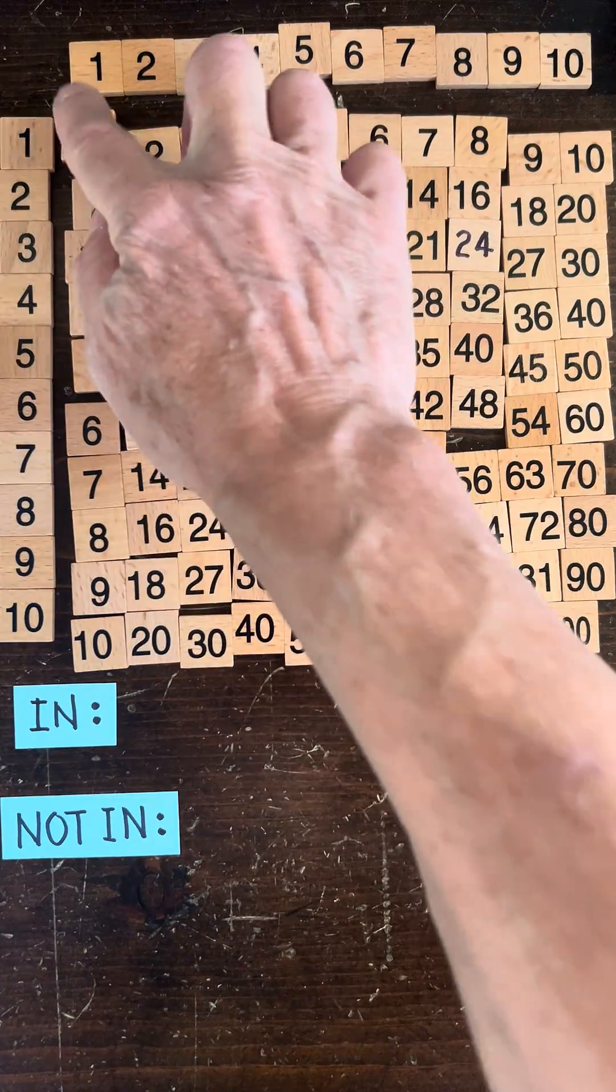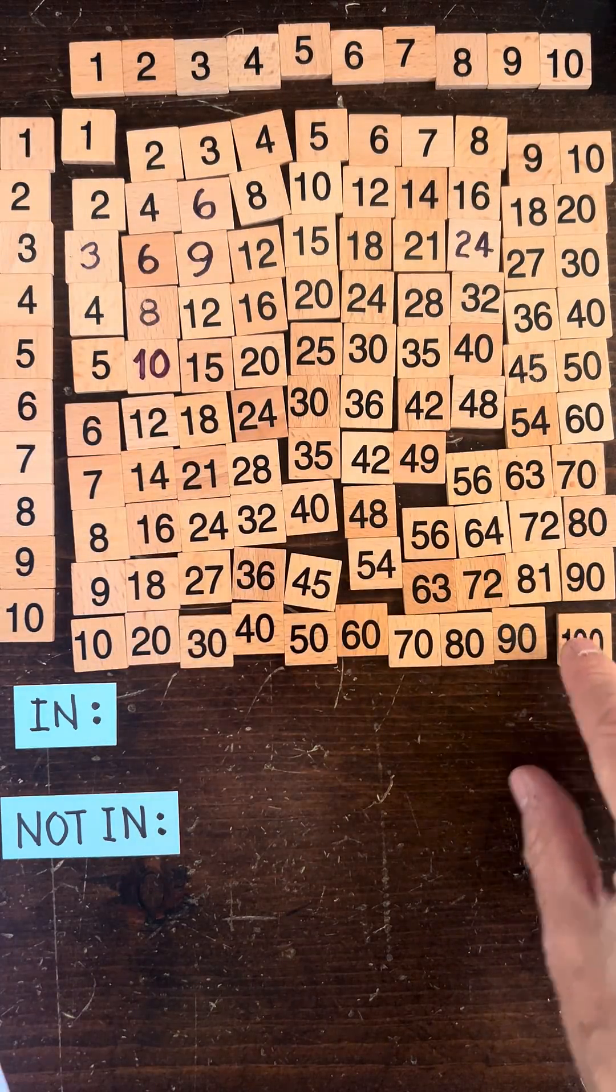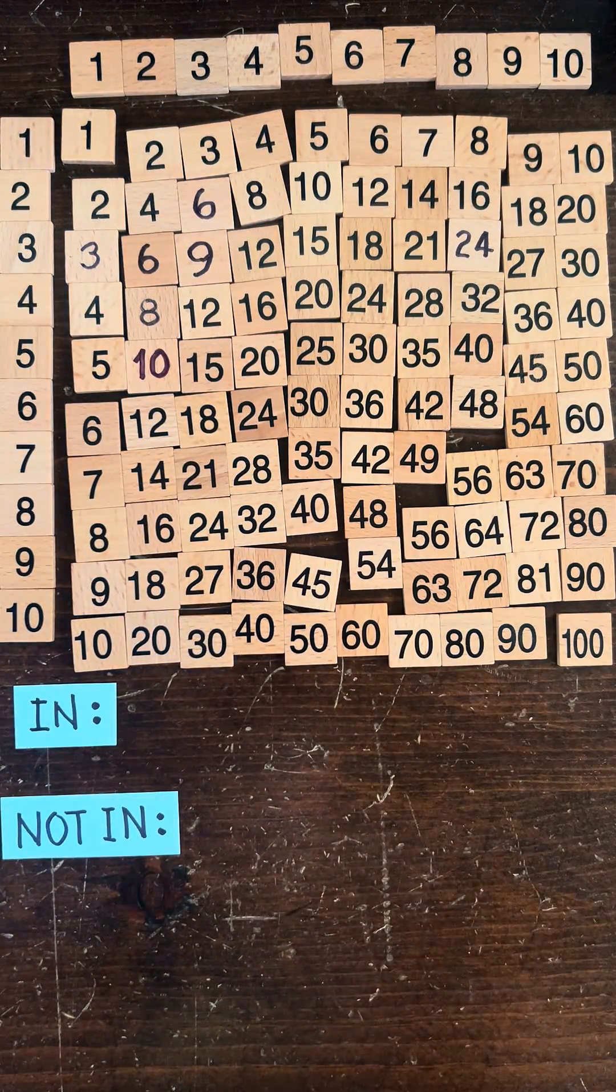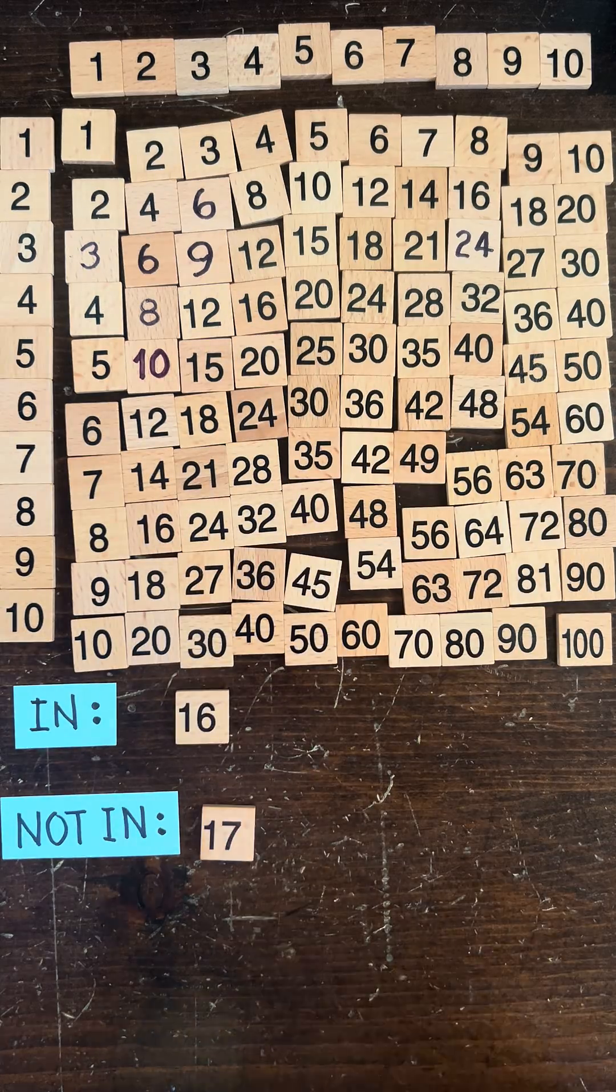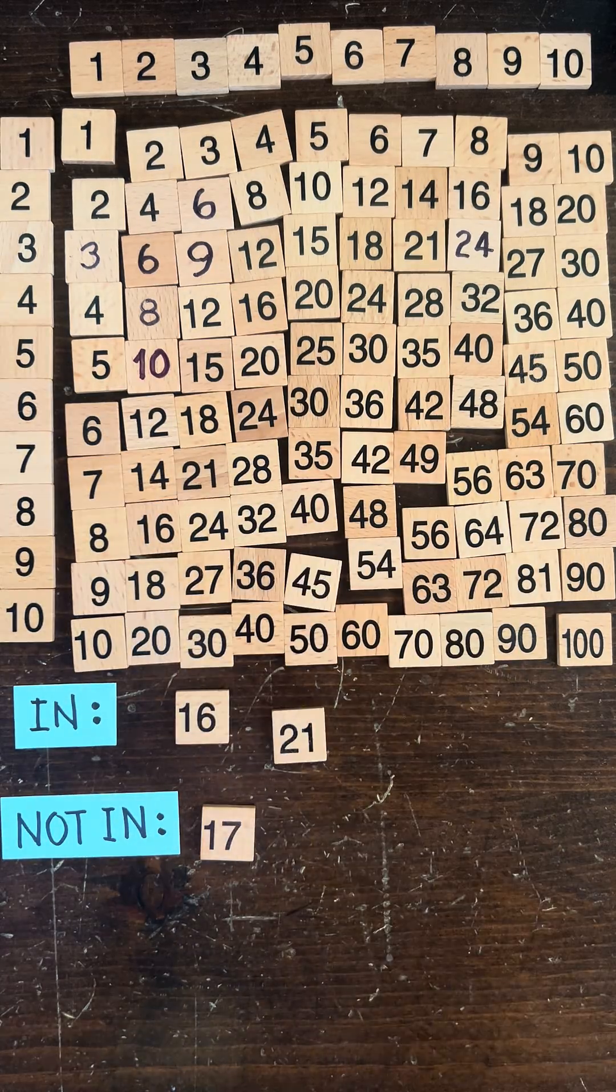For example, how many distinct values between 1 and 100 actually show up? Well, 16 is there but 17 is not. 21 is there but 22 is not.